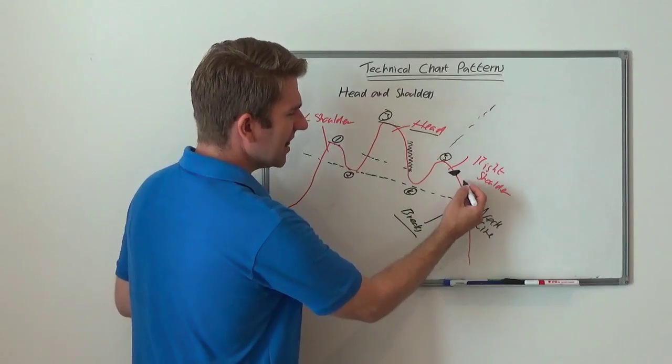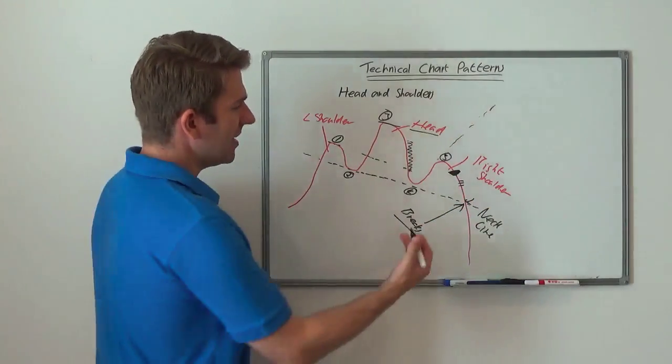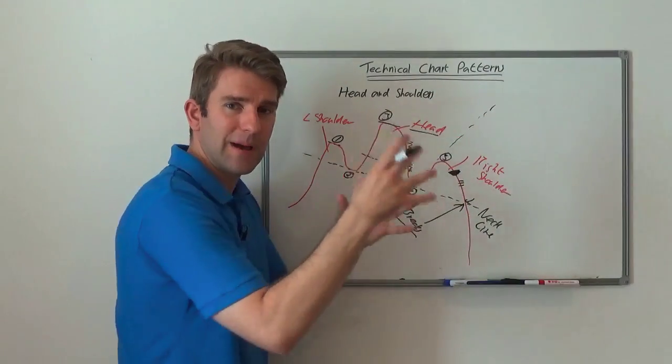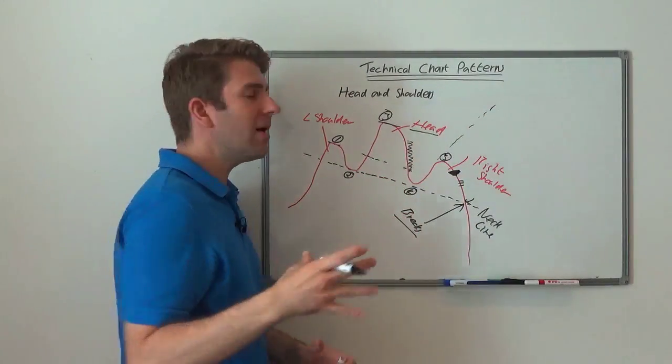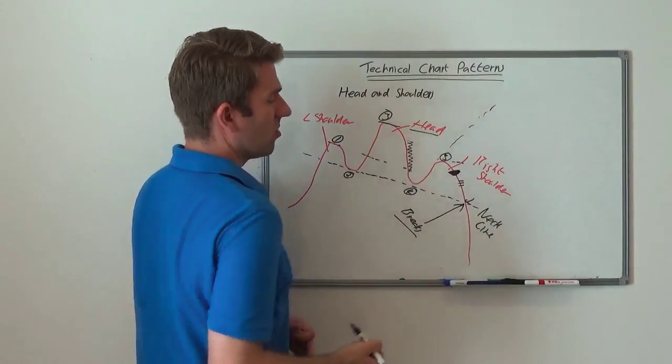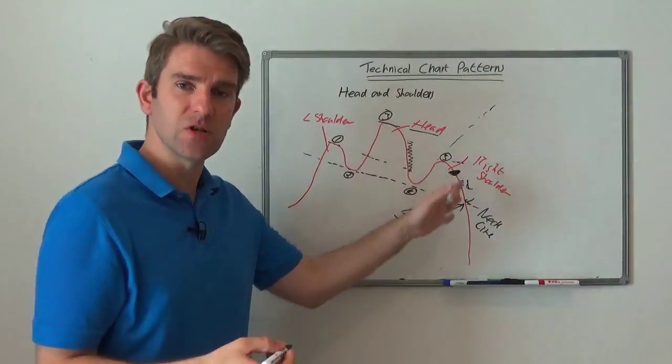But if I can look at it independently and say well this is the point where I believe the pattern is going to happen, I might have a little nibble on the short side with a stop above that shoulder or I might have a little nibble jumping on some momentum if I could see some momentum in there. Now this may be more from a day trading perspective as opposed to a swing trading perspective.